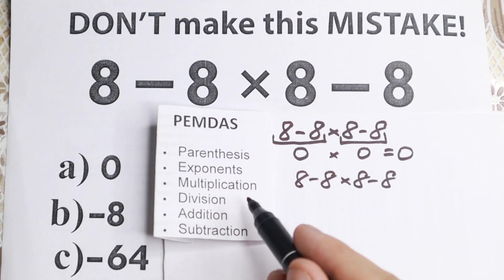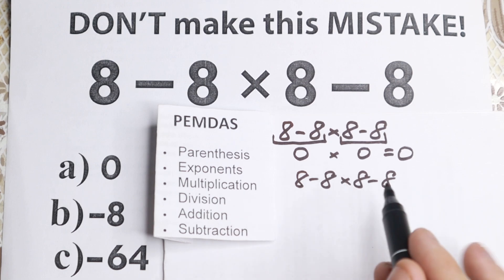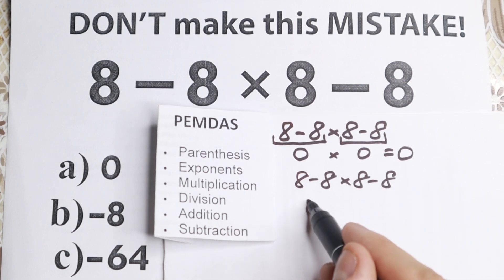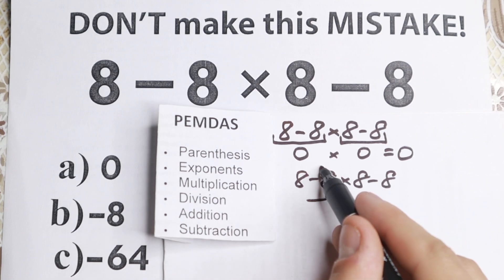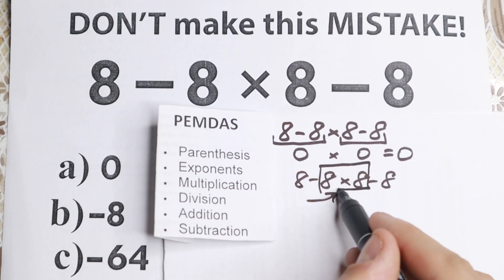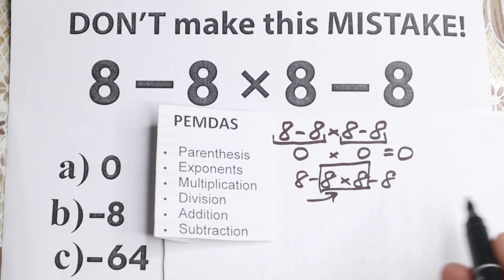Then we have multiplication and division. Are there any multiplication division signs right here? Yes, I see this multiplication sign. As you can see multiplication division is before addition and subtraction. So we need to start with this multiplication first. This is our third step right here.